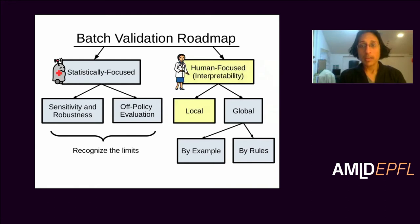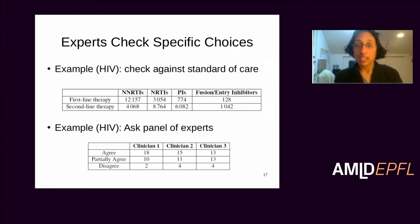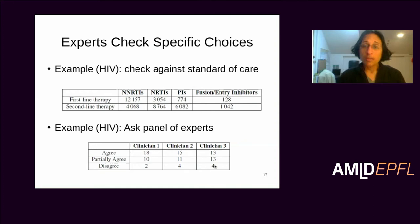I'm going to start with local validation — validation of specific decisions. We present information about a case, present a recommendation, and ask the clinician whether it's a good idea. We have done this for the HIV work: we checked against the standard of care and asked a panel of experts. Most experts mostly agreed with our recommendations. Where they disagreed — in a few places — the disagreements weren't consistent across experts, so we feel we're in the range of solutions where reasonable people might disagree. There were no situations where we were suggesting anything completely unreasonable. But there's an obvious question: how do you know if you've checked enough examples?